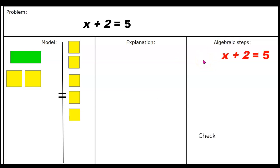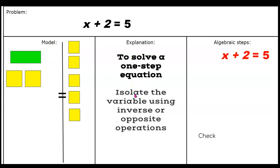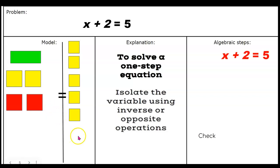Now let's write this using our algebraic steps: X plus 2 is equal to 5. We want to start solving this equation — remember to copy this down on your notes page. To solve a one-step equation, you need to isolate the variable using inverse or opposite operations. In this case, we have X plus 2, and the opposite of adding 2 is subtracting 2. So we're going to place two negative red tiles on the left side of our equal sign and two negative red tiles on the right side.